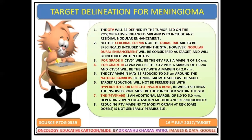In summary: the GTV will be defined as the tumor bed on the postoperative enhanced MRI to include any residual nodular enhancement. Neither cerebral edema nor the dural tail should be specifically included in the GTV; however, nodular dural enhancement will be considered a target and included in the GTV. For grade 2 meningioma, CTB 54 is GTV plus 1 cm; for CTB 60 in grade 3 meningiomas, GTV 54 is GTV plus 1 cm and CTB 54 is GTV plus 2 cm. The CT margin may be reduced to 0.5 cm around natural barriers such as skull. Target reduction is not permitted with hyperostatic or directly embedded bone — the involved bone must be fully included in the GTV. PTV 54 and PTV 60 have additional margins of 0.3 to 0.5 cm, and reducing PTV margins to spare vital structures is generally not permissible.